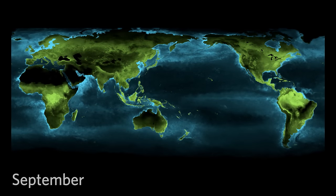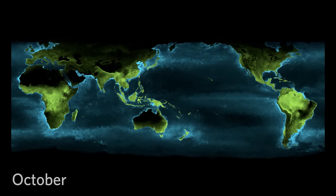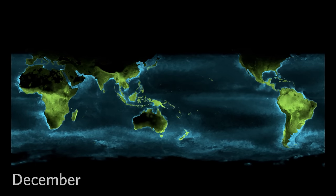On land, forests grow green during the spring, brightening the continents. During winter, continents in this view turn dark from a lack of photosynthesis.